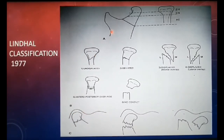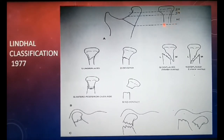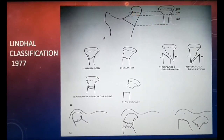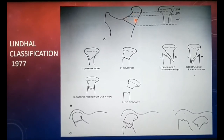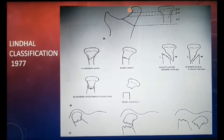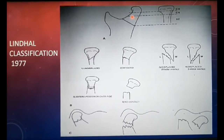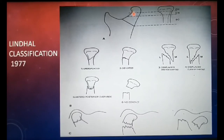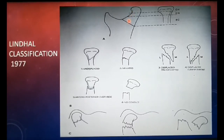Based on anatomic location of the fracture, Lindahl classified condylar fractures into fractures of the condylar head, condylar neck, and subcondylar fractures. The condylar head is defined as the portion of the condyle superior to the narrow constriction of the condylar neck. Fractures of the condylar head are intracapsular — within the confinement of the fibrous capsule. The condylar neck is the thin constricted area immediately below the condylar head; any fracture at or below the condylar neck is considered extracapsular.